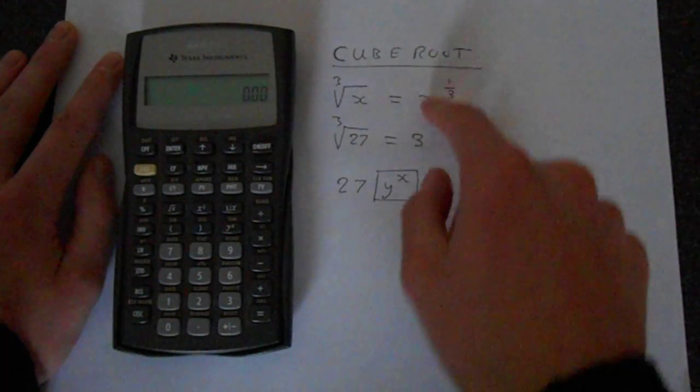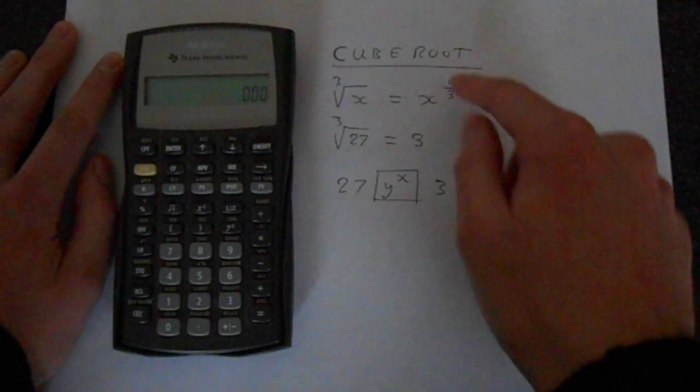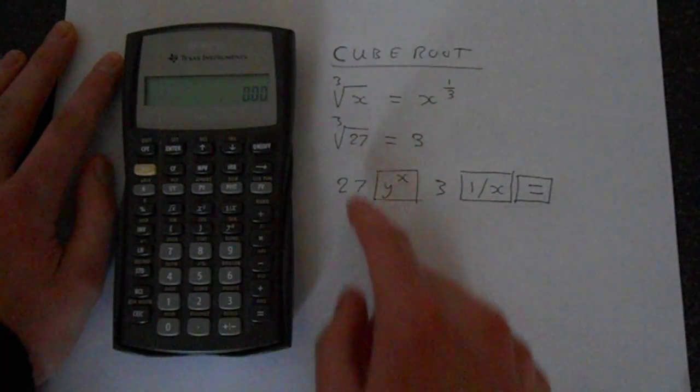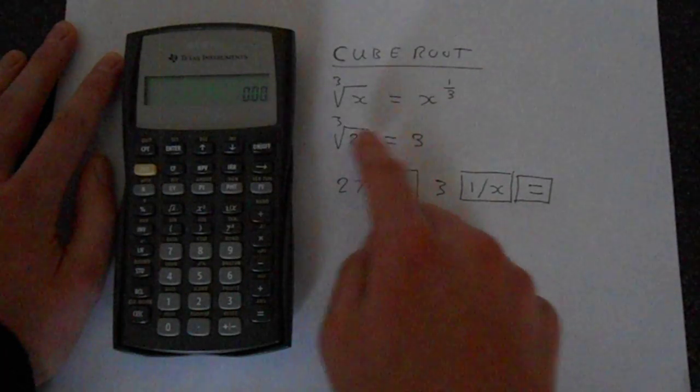So there's an equivalence between that, so instead of trying to find the cube root button we just put in a power of a third. We'll do a simple example which is the cube root of 27, which is 3.